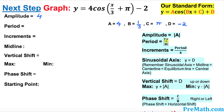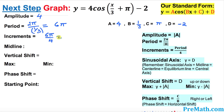The period is always two pi over the absolute value of b. So we put down two pi divided by one over three. Once you take the reciprocal, that becomes six pi. So our period is six pi. Now we want to find the increments. The increment is the period divided by four, which is six pi over four. Simplified, that is three pi over two. So three pi over two is our increment.